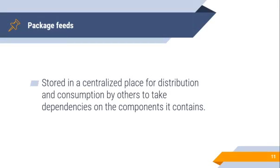Packages should be stored in a centralized place for distribution and consumption by others who want to take a dependency on the components they contain. This centralized storage for packages is most commonly called a package feed. There are other names in use, such as repository or registry. Each package type has its own type of feed — one feed typically contains one type of package. There are NuGet feeds, npm feeds, Maven repositories, PyPI feeds, and Docker registries. Package feeds offer versioned storage, meaning a certain package can exist in multiple versions in a feed, catering for consumption of a specific version.